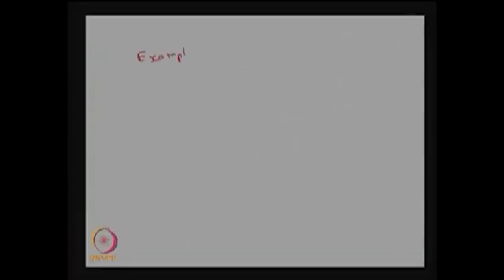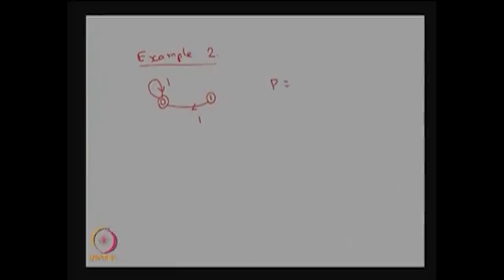Example 2: here I am going to discuss a reducible Markov chain. Here we have only two states. The probability of the system moving from state 0 to 0 in the next step is 1, and the probability of the system coming from state 1 to 0 in one step is also 1. This is a state transition diagram of a time-homogeneous discrete Markov chain, and I am going to write the one-step transition probability matrix for this discrete time Markov chain.